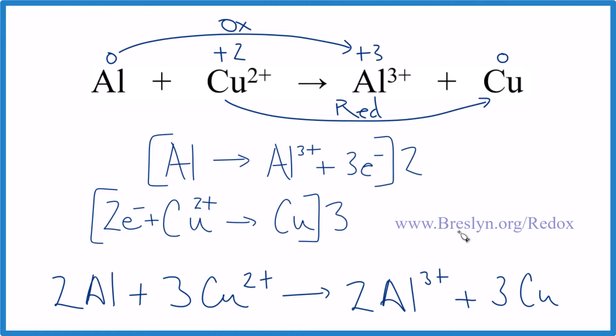And that's it. This is Dr. B balancing the redox reaction for aluminum plus the copper two ion. You get the aluminum ion itself and then just solid copper. Thanks for watching.